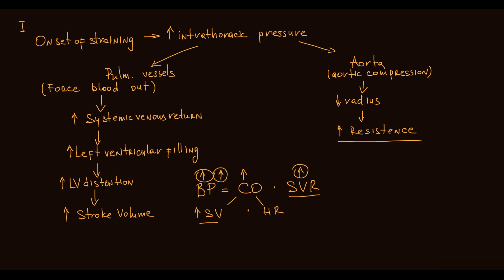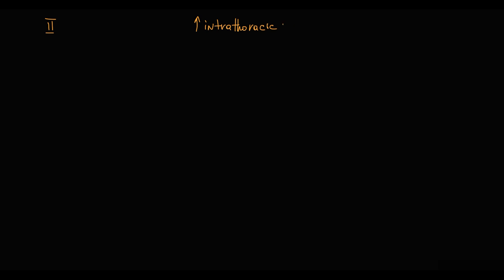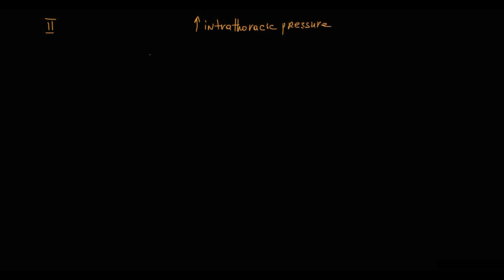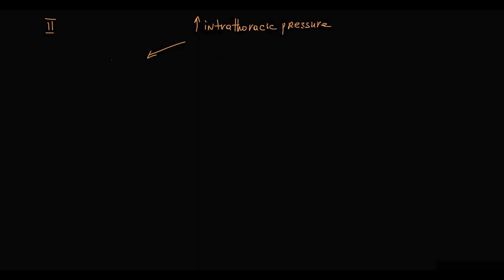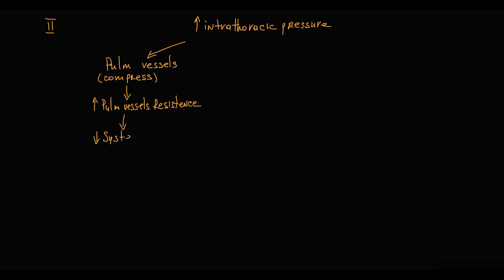This sequence of events — increased blood pressure through increasing stroke volume and systemic vascular resistance — is called Phase 1 of the Valsalva maneuver. In Phase 2, after blood has already been forced from pulmonary circulation, increased intrathoracic pressure compresses pulmonary vessels, causing increased pulmonary vessel resistance that decreases systemic venous return.